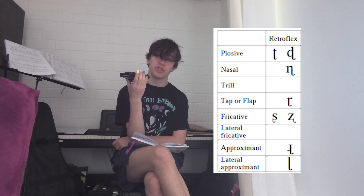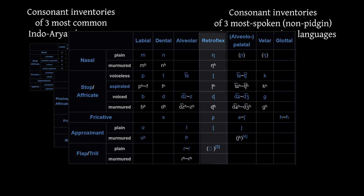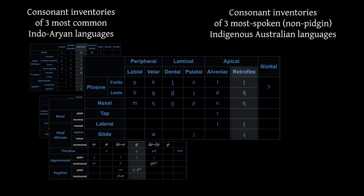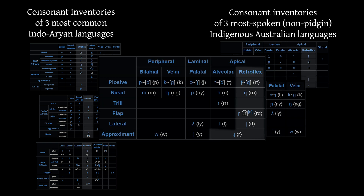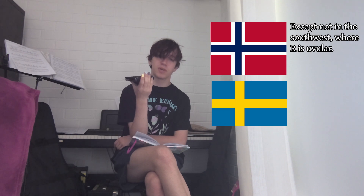Let's start with Swedish and Norwegian. A feature that you don't commonly find in European languages are retroflex consonants. They're very common in other places in the world, particularly the Indian subcontinent and the Australian continent. Those places have got a wealth of retroflex consonants floating around, but in Europe for some reason you just don't find it as much. But two languages that you do find it — and there's probably more — are Norwegian and Swedish.